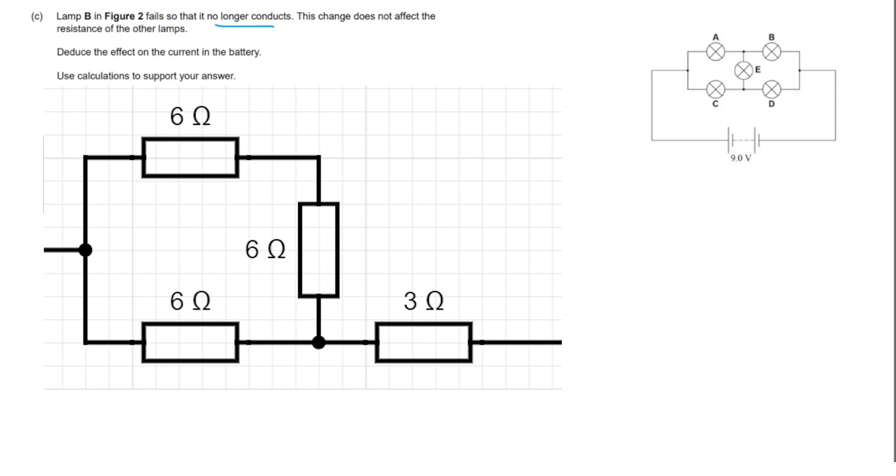First thing to notice is that we actually have two six ohm resistors in series, so we can easily add those up to make a 12 ohm. Next you'll see that what we have now is a 12 ohm and a 6 ohm resistor in parallel, and then that parallel combination connected to the three ohm.